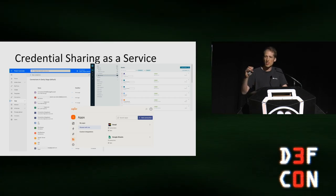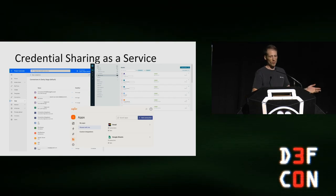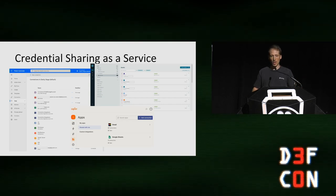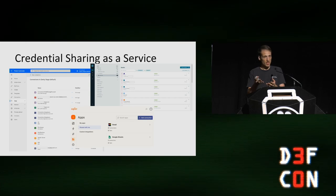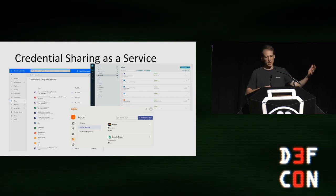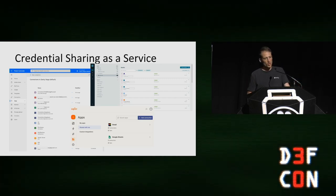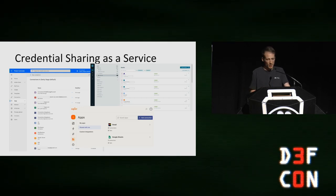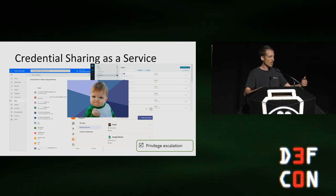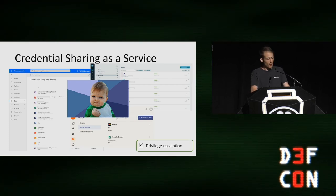When you have access to the default environment, you get access to tons of connections across the organization — SQL servers with root accounts, users' own identities to Office and Slack, FTP connections, everything users use these platforms for. What we're seeing hackers do is: once they get into an enterprise and find even one user's account to log into their SaaS, they can very easily escalate their privileges. It's already built in.